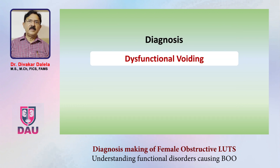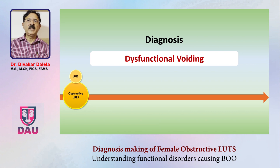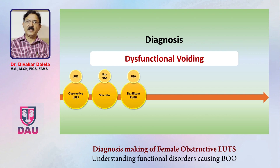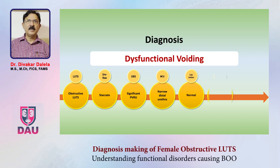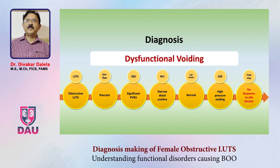The urodynamic study of these patients again shows high pressure, low flow voiding. Here you are making a diagnosis of dysfunctional voiding, where the seat of the functional problem is at the level of the external sphincter. To summarize: obstructive lower urinary tract symptoms; uroflowmetry showing a staccato pattern; ultrasound with significant post-void residual with or without back pressure changes in the kidneys; voiding cystourethrogram showing a narrow distal urethra at the level of the external sphincter; normal urethral calibration; high pressure voiding on urodynamics; and no response to alpha blockers.